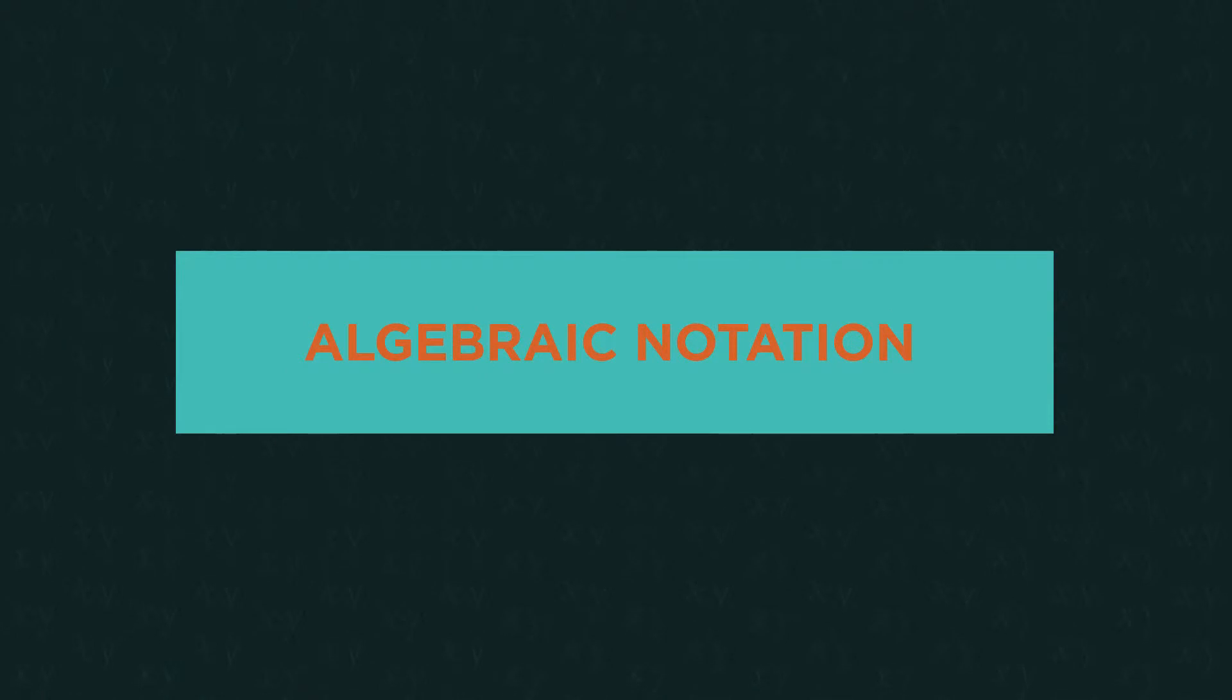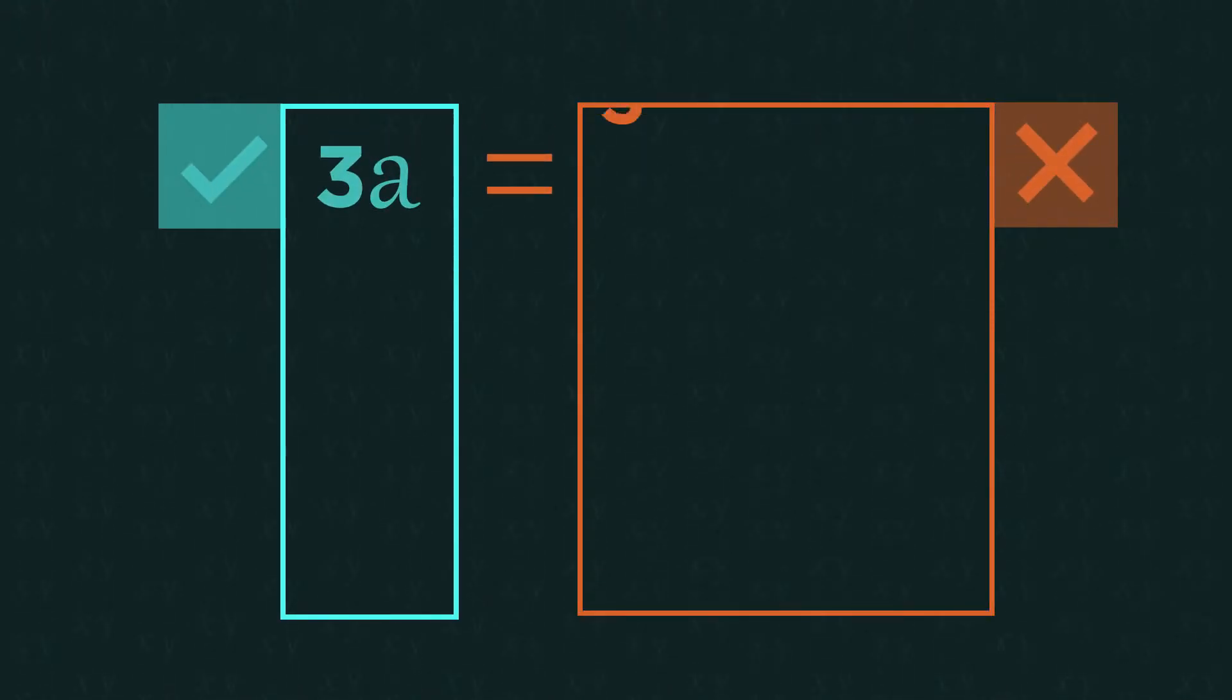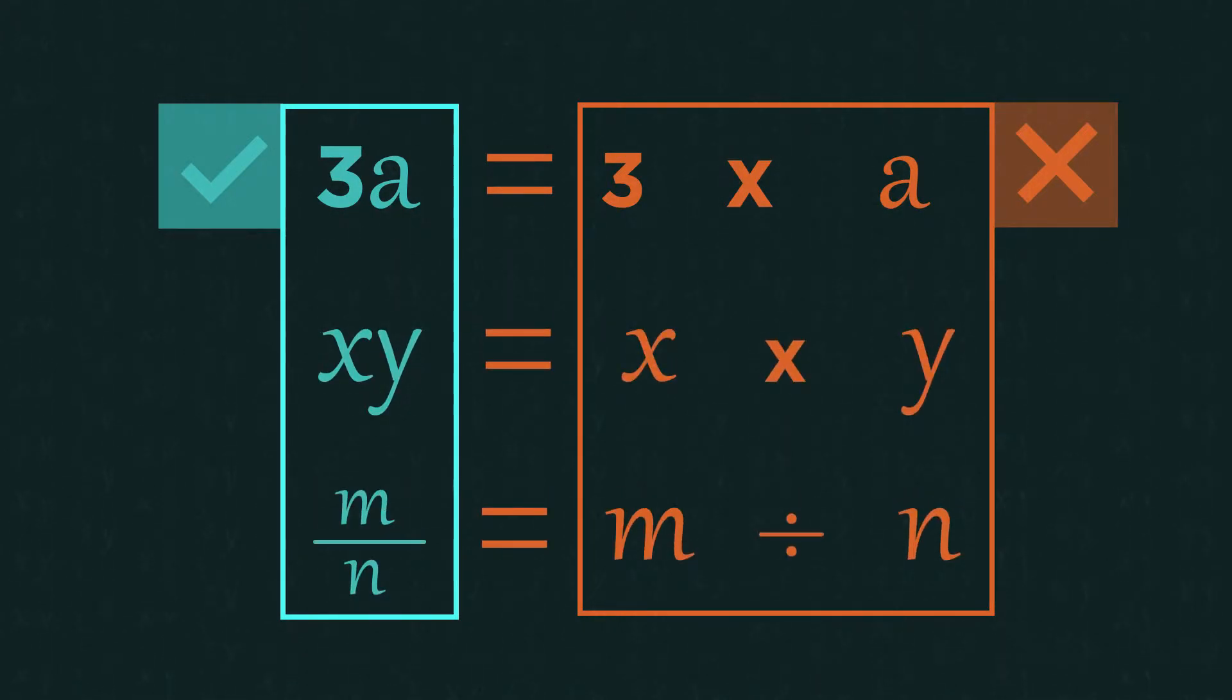Before we get started on simplifying, a few things to remember. In the algebraic notation video, we discovered that we always use a curly x for the letter, that we don't really use a multiplication sign. So this means 3 multiplied by a, and x multiplied by y. And instead of using the division sign, we use fractions.